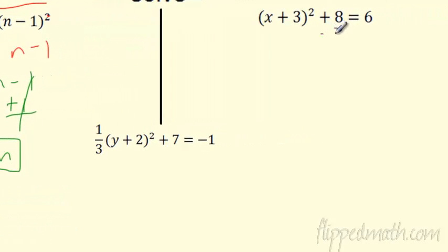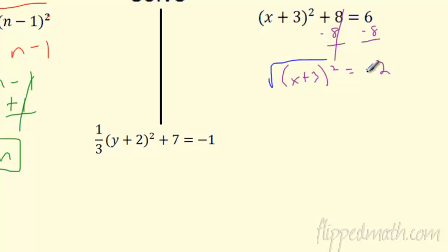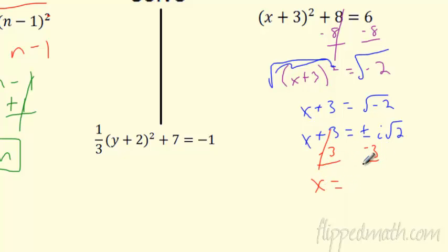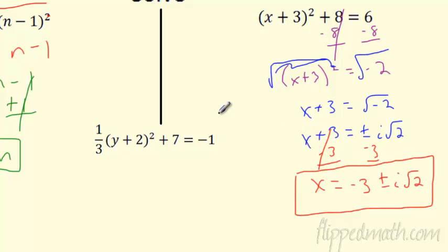How about the next one — a little bit trickier. I'm going to subtract 8 from both sides, so I'm looking at x plus 3 squared equals negative 2. When I've got nothing but the perfect square left, I can square root both sides. I'm left with x plus 3 equals the square root of negative 2, which is plus or minus i√2. I subtract 3 from both sides to get x by itself. x equals negative 3 plus or minus i√2 — those are the two solutions.